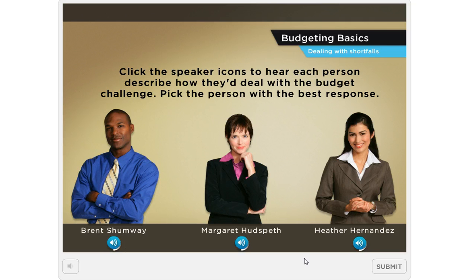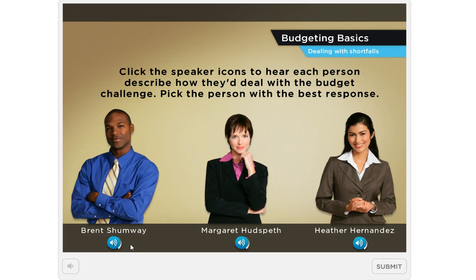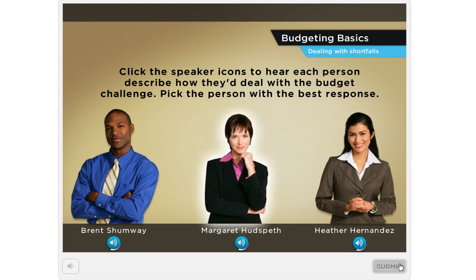These are audio-only markers, so the learner can click to listen. You can hear some audio play, and then the learner can click a different one if they want to. They can listen to that character's audio and continue listening to any or all of the audio markers until they have enough information to make their choice. Once they're ready they can choose a character and hit the Submit button to get their feedback.